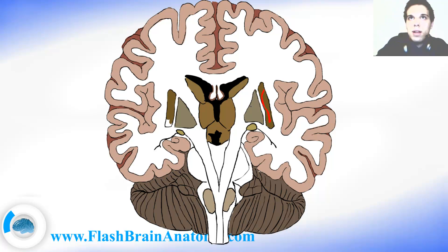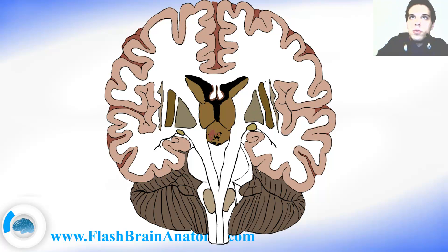We have the putamen and the pallidum. The pallidum can also be divided into the medial pallidum and the lateral pallidum. Then we also have the claustrum. The white matter between the claustrum and the putamen is called the extreme capsule. The white matter between the putamen and the pallidum is called the external capsule. And as I said, this was the optic tract.